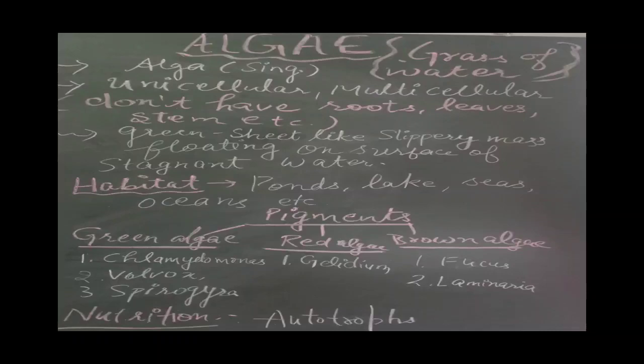Red algae examples are Gelidium. Brown algae examples are Fucus and Laminaria. The nutrition mode of algae is autotrophic, because they are green plants and can synthesize their own food with the help of photosynthesis. They have chlorophyll present, so they can make their own food.